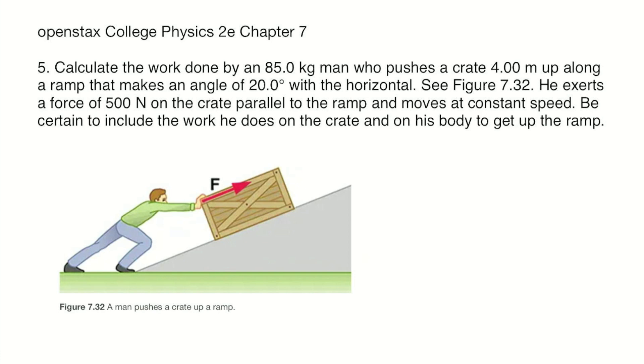Let's start with what we know. We know the mass M of the man is 85.0 kilograms. The displacement D is 4.00 meters.